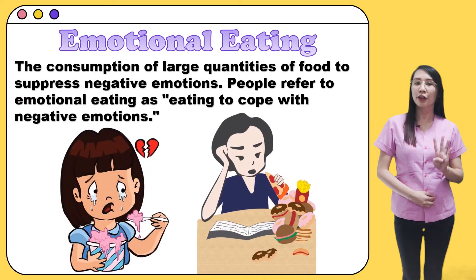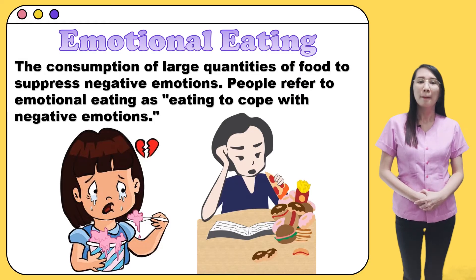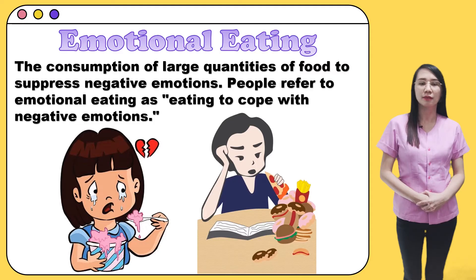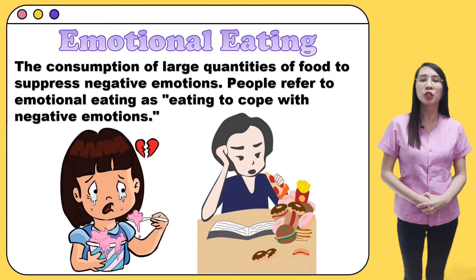Fourth is emotional eating — the consumption of large quantities of food to suppress negative emotions. People refer to emotional eating as eating to cope with negative emotions. More specifically, emotional eating in order to relieve negative emotions would qualify as a form of emotion-focused coping, which attempts to minimize, regulate, and prevent emotional distress.